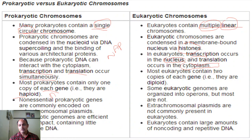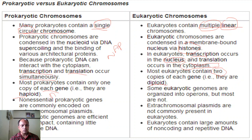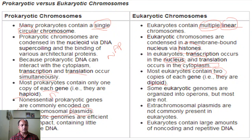Most eukaryotic cells consist of two or more copies of each gene, meaning they are diploid (2N). Some prokaryotic genomes are organized into operons but most are not. Non-essential prokaryotic genes are commonly encoded in extrachromosomal genetic material called plasmids, which are not commonly present in eukaryotes. Prokaryotic genomes are efficient and compact, containing little repetitive DNA, while eukaryotic cells contain large amounts of non-coding and repetitive DNA.